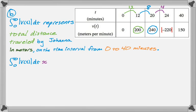Then I go from 20 to 24, that's 4. And then I'm going to use the absolute value of negative 220, because we're doing the absolute value of V of T. And then finally, from 24 to 40, which is 16, and I have to use 150. So, I'm going to fill those in.